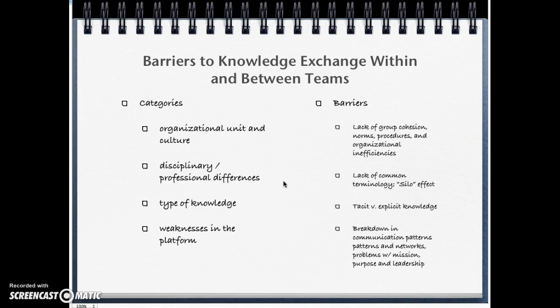The silo effect can occur, for example, in a task force situation where teams want to be the ones to catch a suspect and keep information to themselves. Type of knowledge — both tacit and explicit — can also be a barrier, depending on the level each employee possesses.